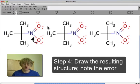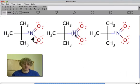Step four, after you've drawn your arrow, is to draw the resulting Lewis structure from that arrow being drawn. So you can draw that on Marvin sketch as such.